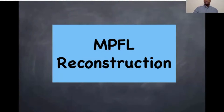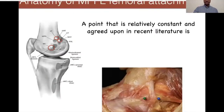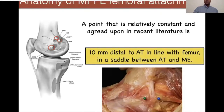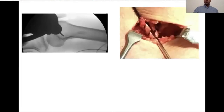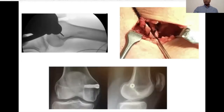MPFL reconstruction is the cornerstone of patellofemoral stabilization surgery. The femoral attachment is absolutely vital. The point agreed in the literature is around 10 mm distal to the adductor tubercle. You can either palpate it or use intraoperative imaging. Irrespective, it is important to check the point for isometry before you create the tunnel and perform the MPFL reconstruction.